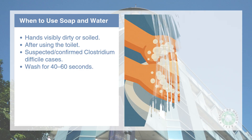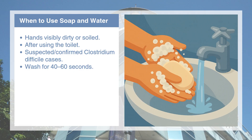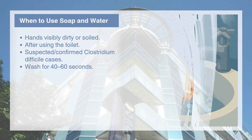Soap and water are necessary when hands are visibly dirty, after using the toilet, or when dealing with pathogens like Clostridium difficile. Alcohol-based hand rubs are not effective against certain spores. Remember to scrub your hands for at least 40 to 60 seconds during hand washing to achieve the maximum removal of microorganisms.